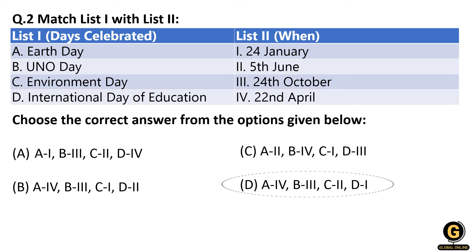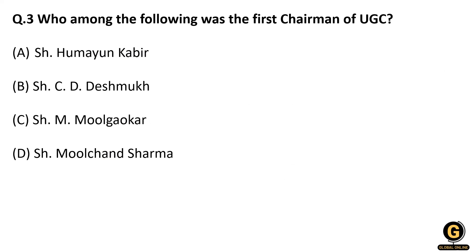The next question asks: who was the first chairman of the UGC? The UGC was first formed in 1945 to oversee operations of three universities: Aligarh University, Delhi University, and Banaras University. In 1947, its authority was extended to all universities across India.